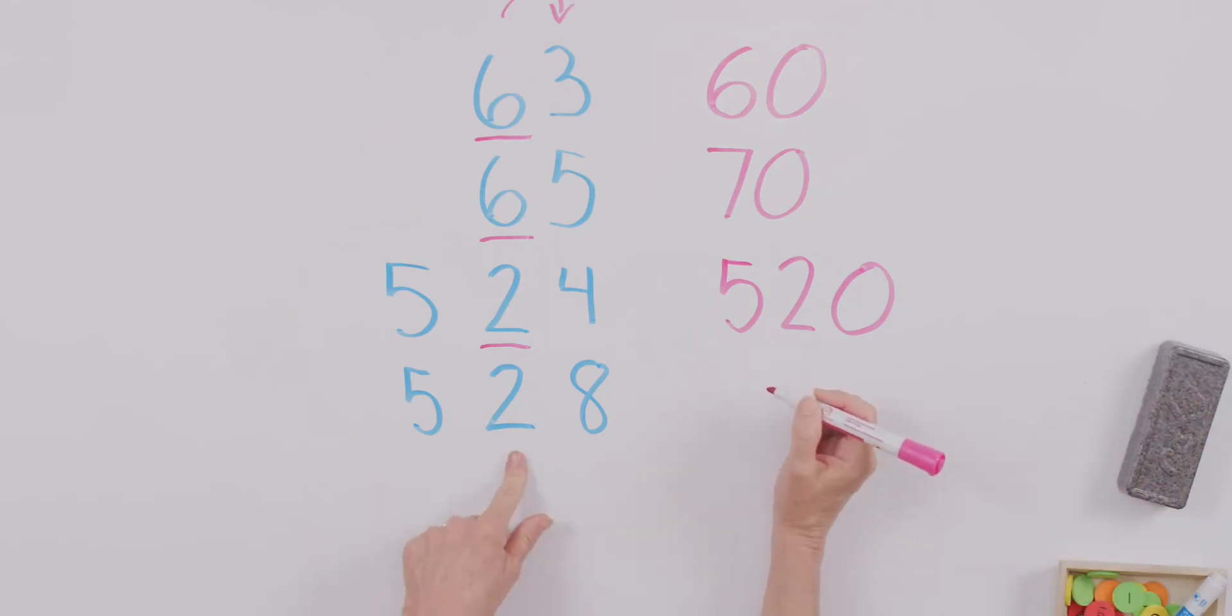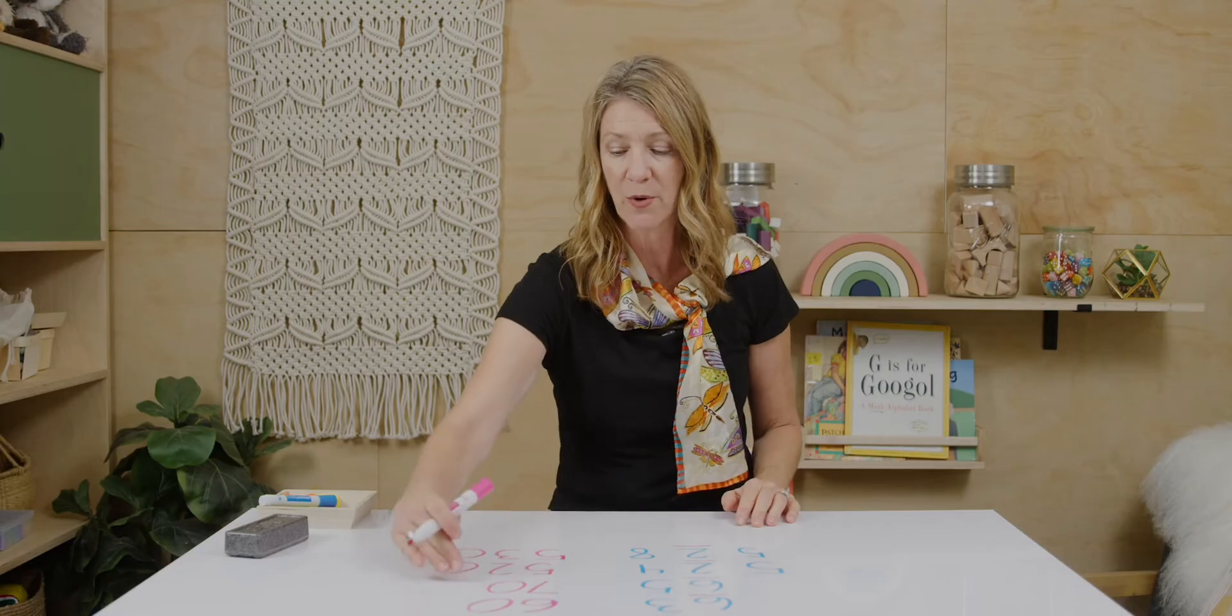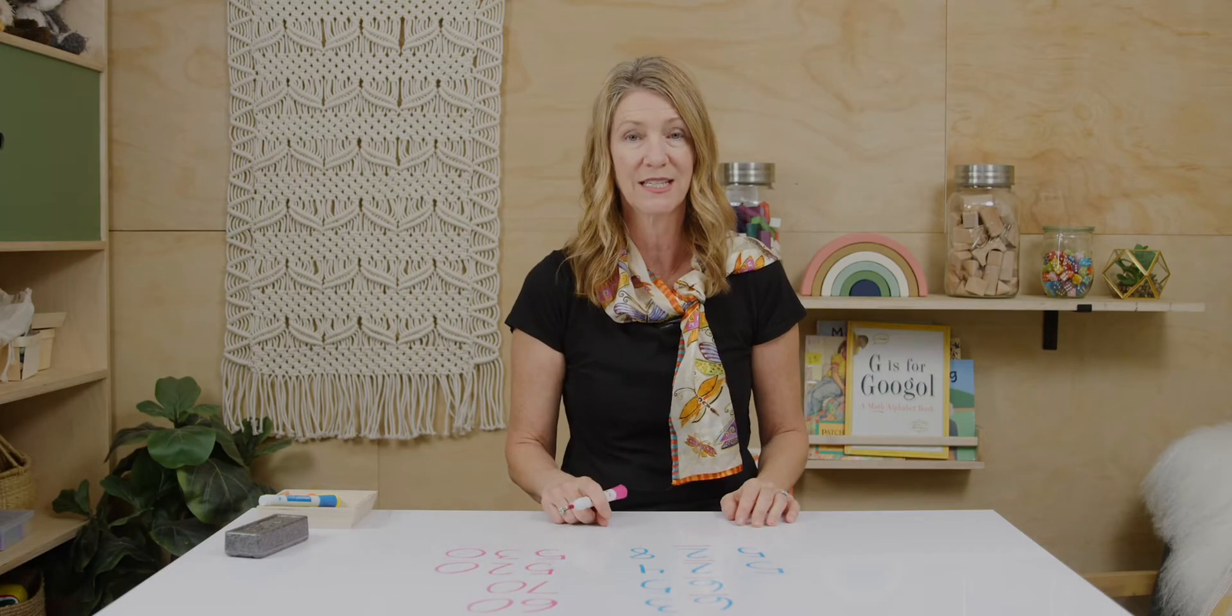All right, let's take a look here. We're going to underline our digit in the tens column. Look next door. Is it five or greater? So we're going to add one more. Five hundred thirty. Everything after is zero, not more. So these are numbers that are rounded to the nearest tens column.